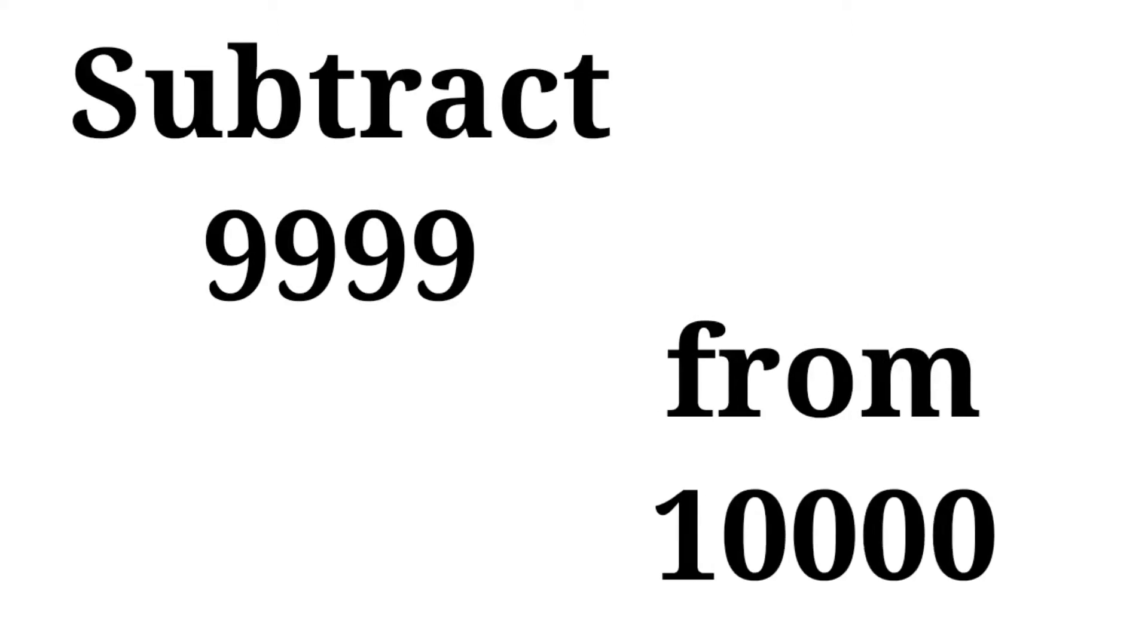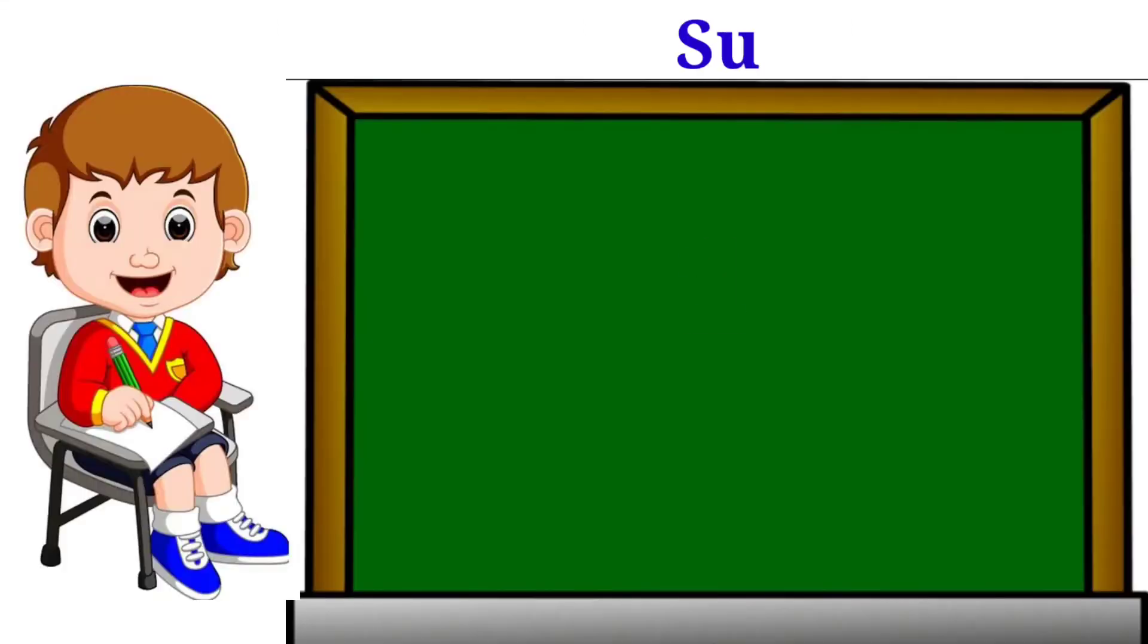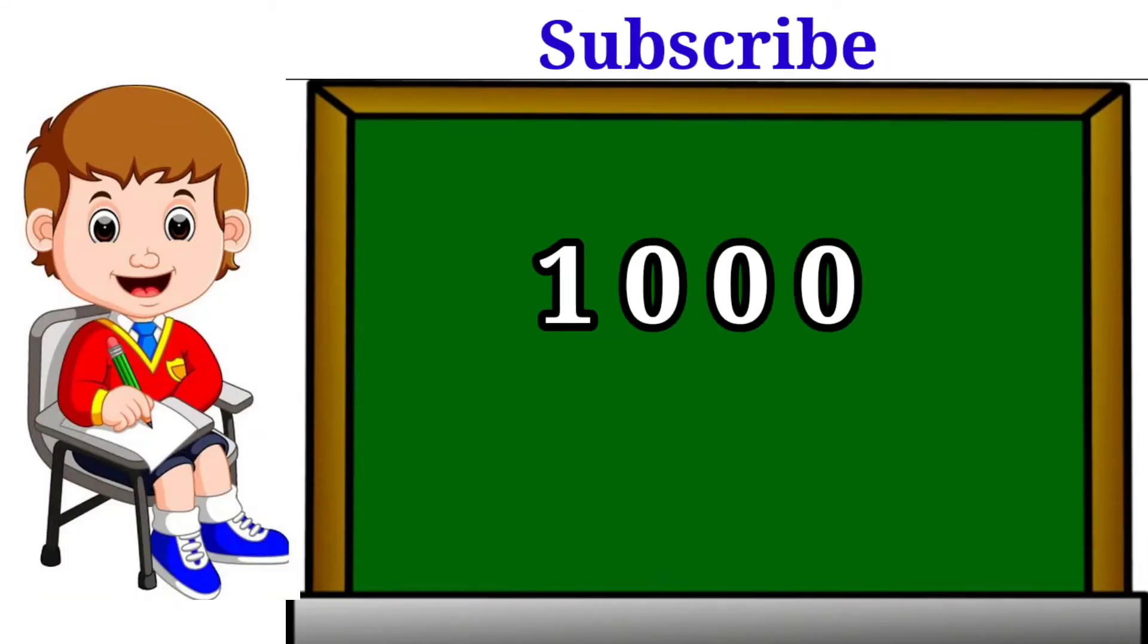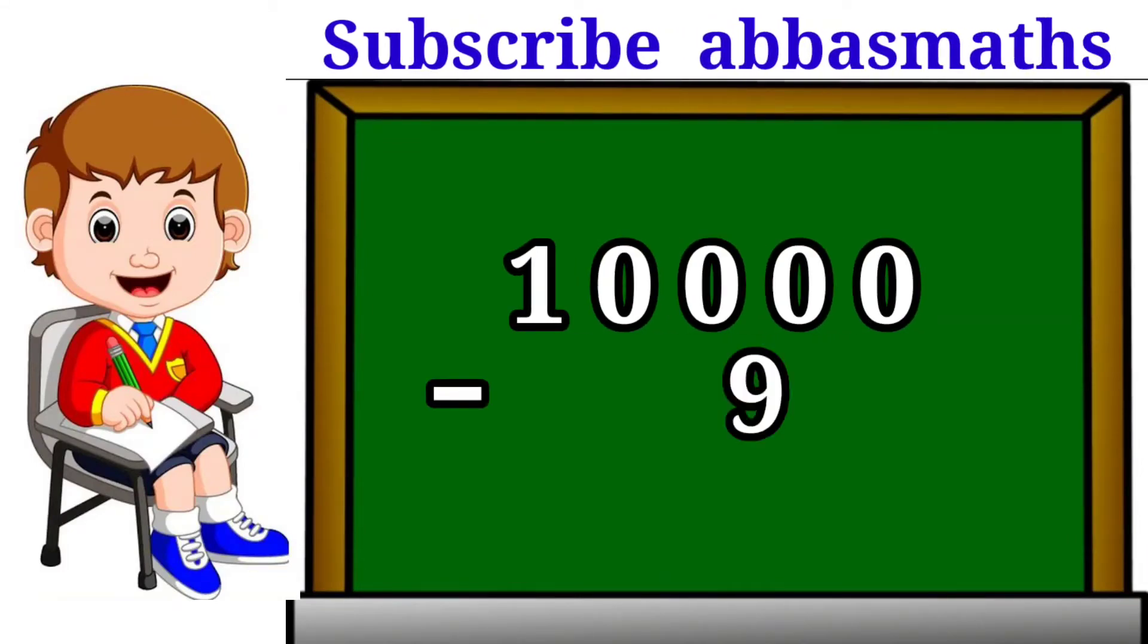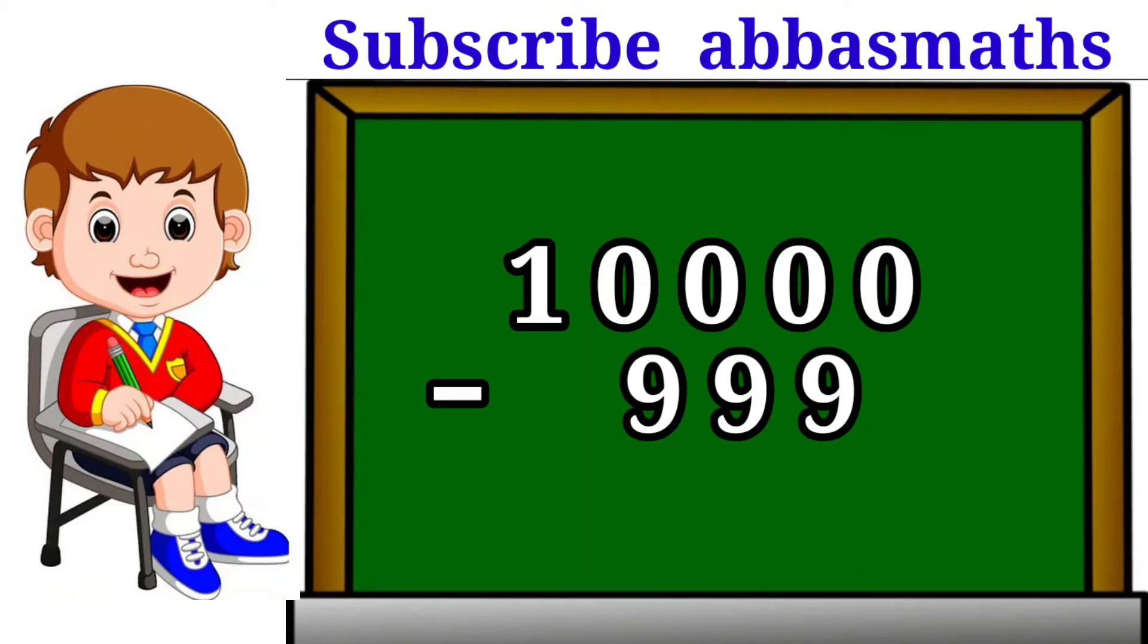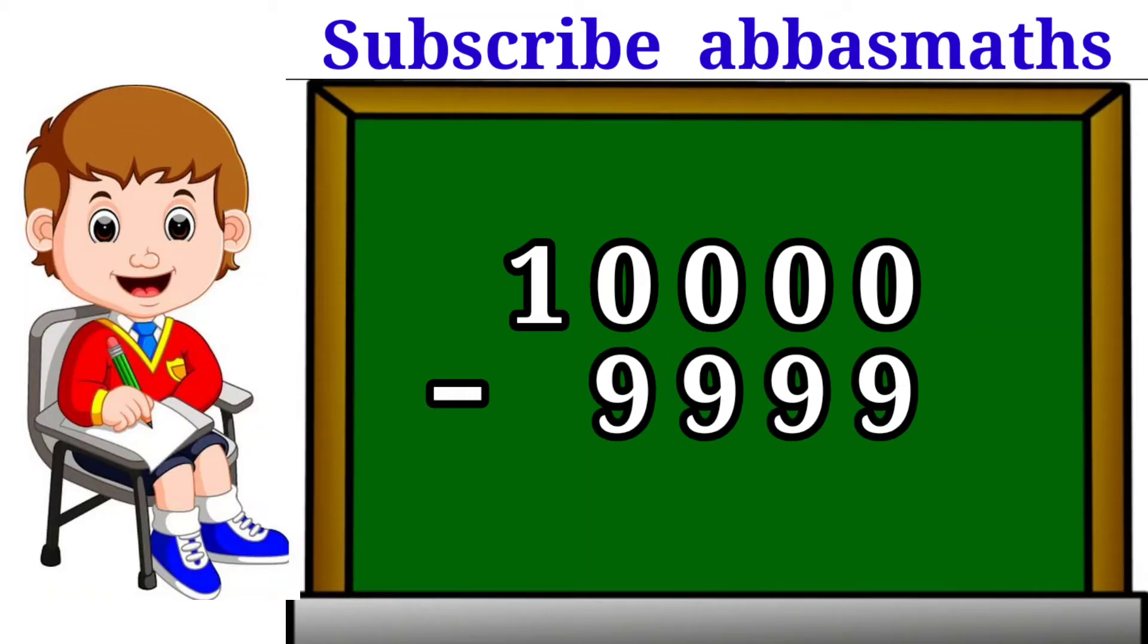Subtract 9999 from 10,000. The procedure is we write 10,000 above minus 9999.